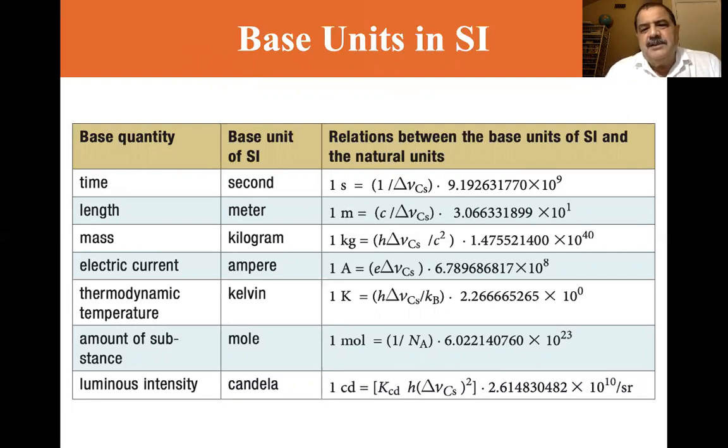If you look at the relations between the base units of SI and the natural units, they look a little more complicated, especially the kilogram. You see h Δν_Cs divided by c squared. The h Δν_Cs is basically a form of E equals mc squared, where the E is Planck's constant times the frequency of cesium.